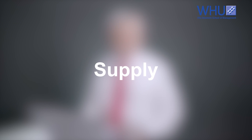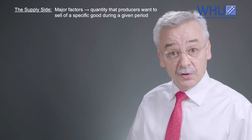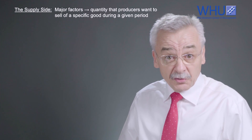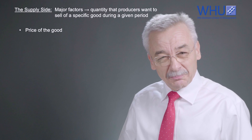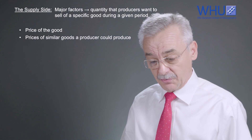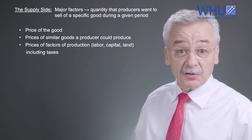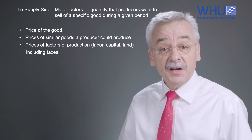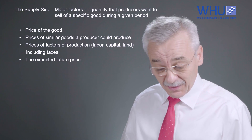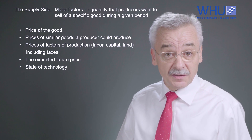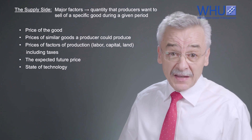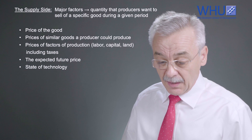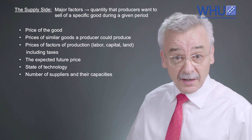On the supply side, there are also a number of factors that determine what producers want to sell. These include: the price of the good; prices of similar goods they could alternatively produce; prices of factors of production, which influence their costs; the expected future price, determining whether they sell today or tomorrow; the state of technology, which determines at what price levels they can produce; and the number of suppliers — with more suppliers, we have a higher level of supply.